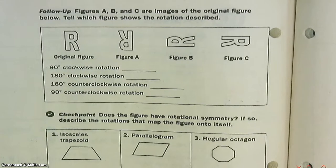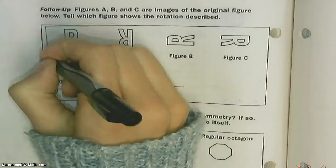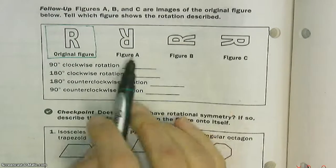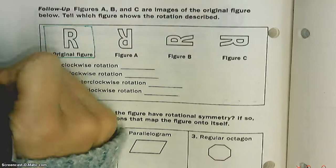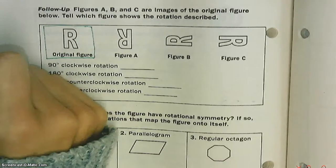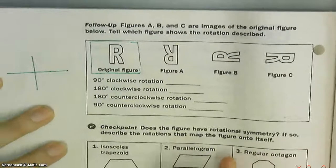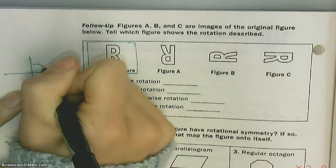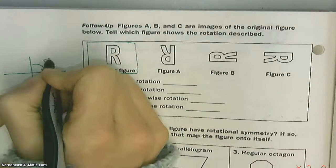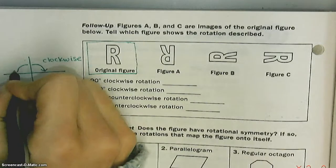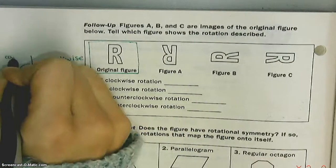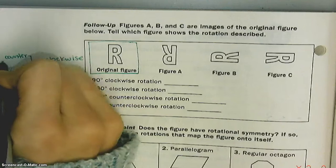Figures A, B, and C have the original figure or images of the original figure. Tell which one shows the rotation described — here's your original. Which one shows 90 degrees clockwise? 180 degrees clockwise? Let's talk about clockwise and counterclockwise. Going in the same direction as the clock is clockwise; going in the opposite direction is counterclockwise.